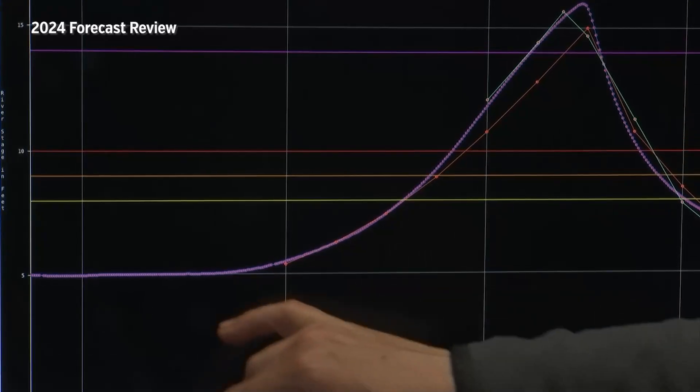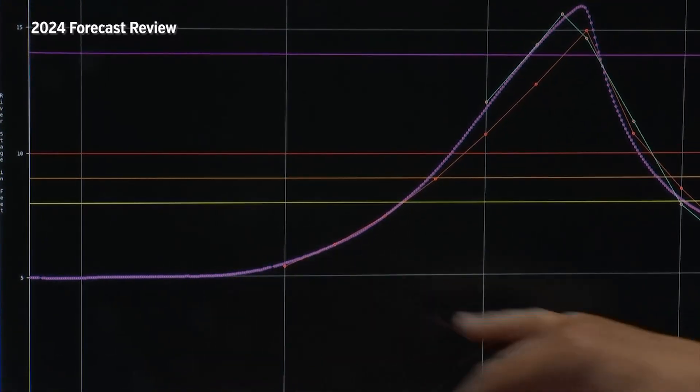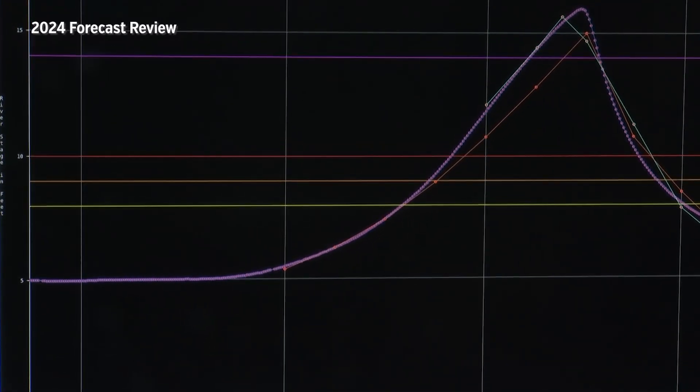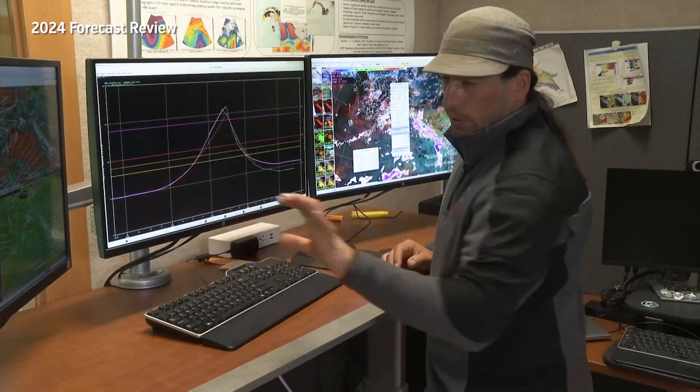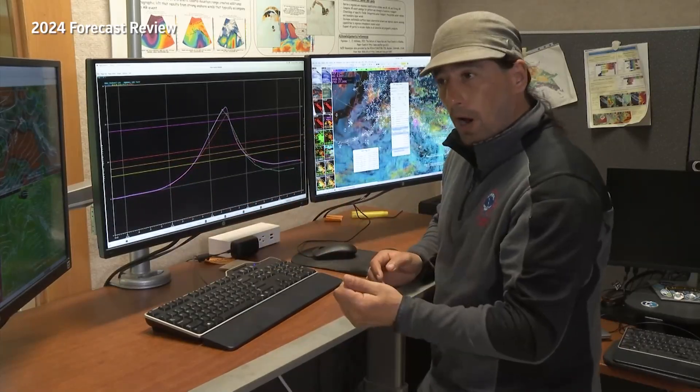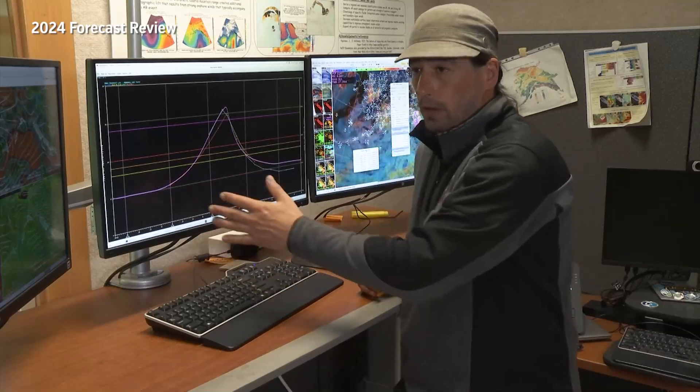This is the rise that we're going to start acting on when we see Mendenhall Lake start responding to outburst floods. We're looking for this type of rise right in this circle, right in this area. Start seeing that rise going up as water from the basin is now hitting Mendenhall Lake.